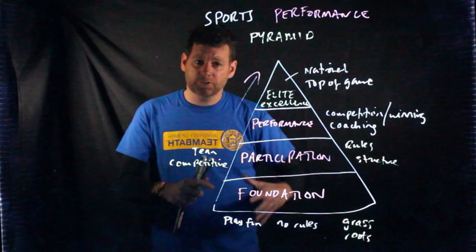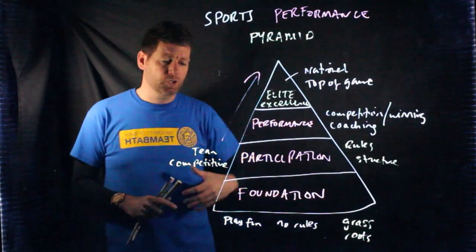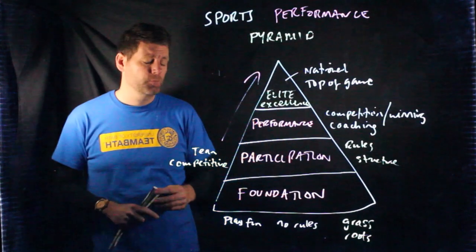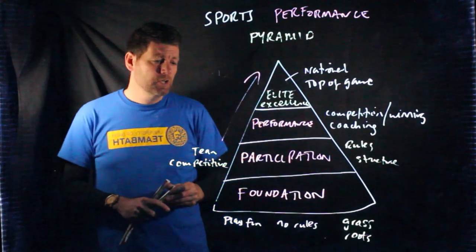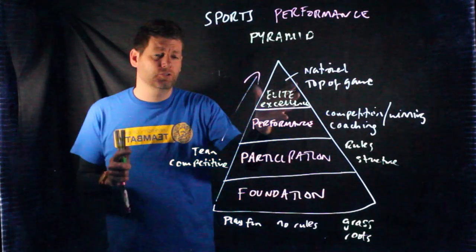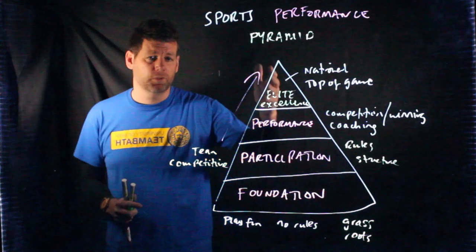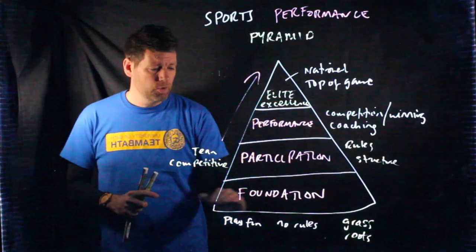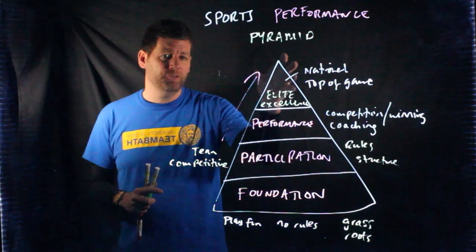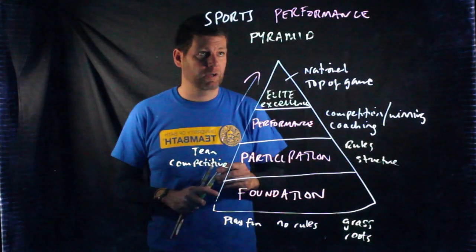A few reasons why people fall off the pyramid: sometimes they just get bored of the sport and they're not passionate enough. Sometimes they don't have transport, money, or access for competition fees. Sometimes they have too many sports going on and can't choose a single one. And sometimes they're just not good enough to make it to the top level. So all of us have a place within this pyramid, but only a few get to the top level — these are the people who make professional careers out of it.